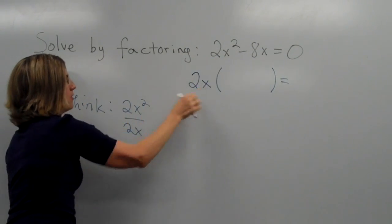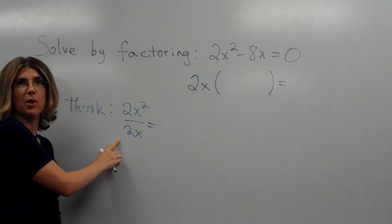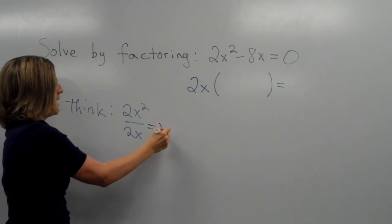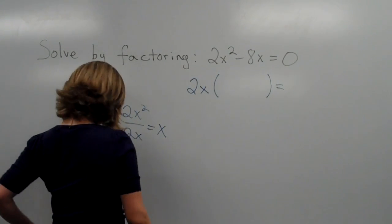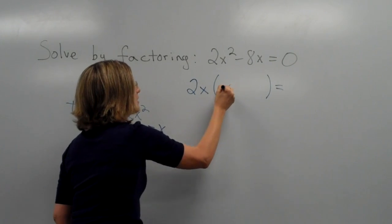So this over that. And that gives us 2 over 2 is 1, x squared over x is x. And that is where we get x that would go right here.